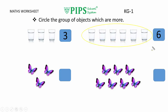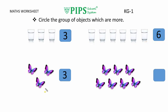Now students, count with me how many butterflies are in the first group. Let's start: 1, 2 and 3. How many butterflies are there? There are 3 butterflies.